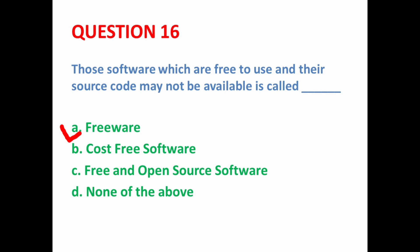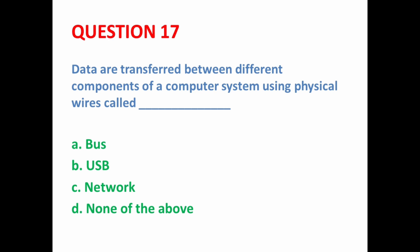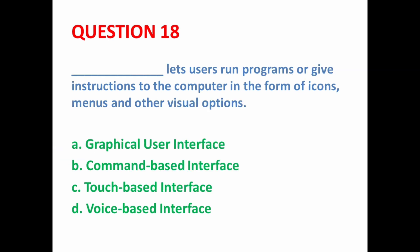Next MCQ: Data is transferred between different components of a computer system using physical wires called dash — such as between input devices and CPU, and between CPU and output devices. So here option A is the correct option.